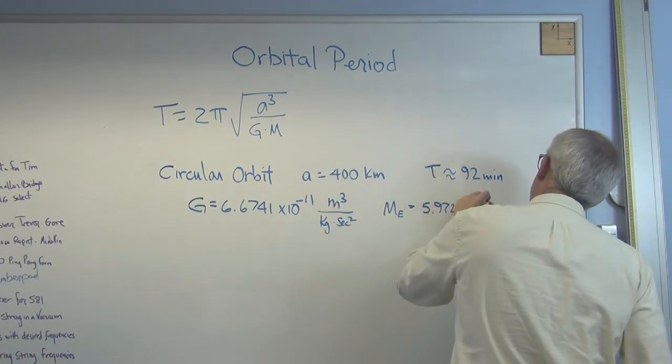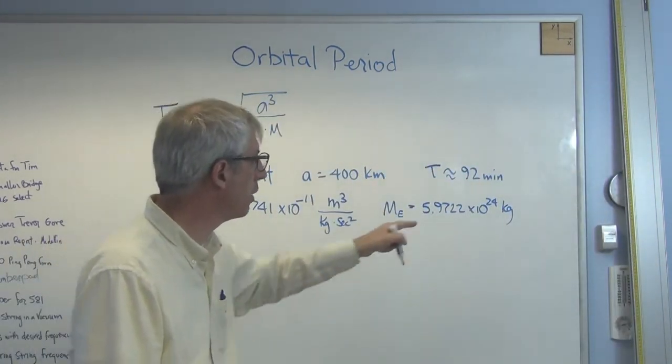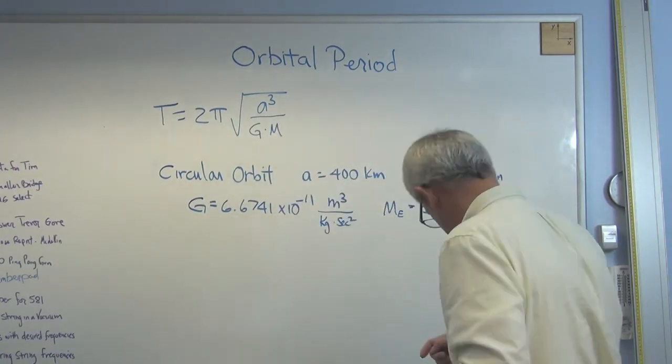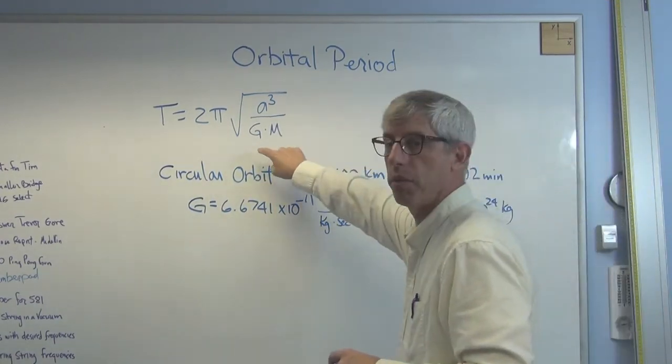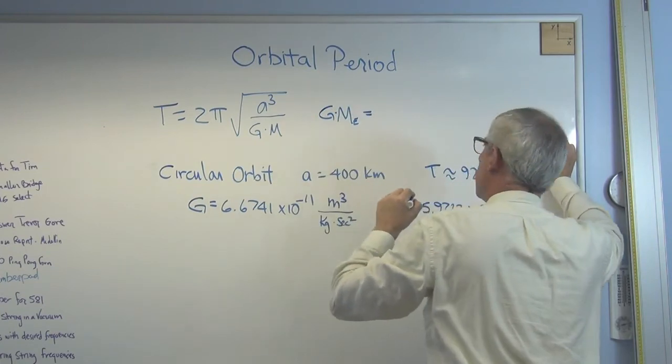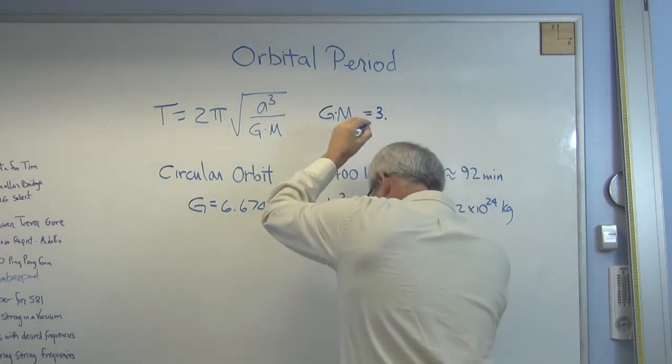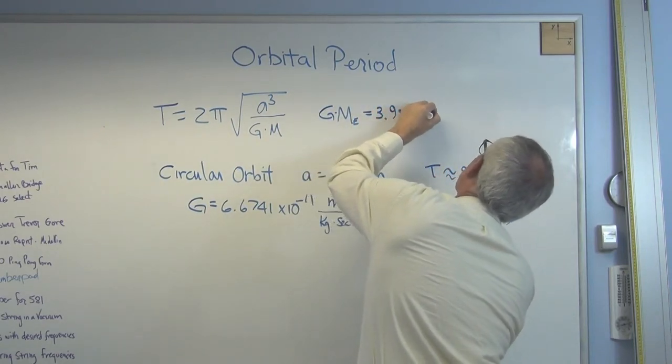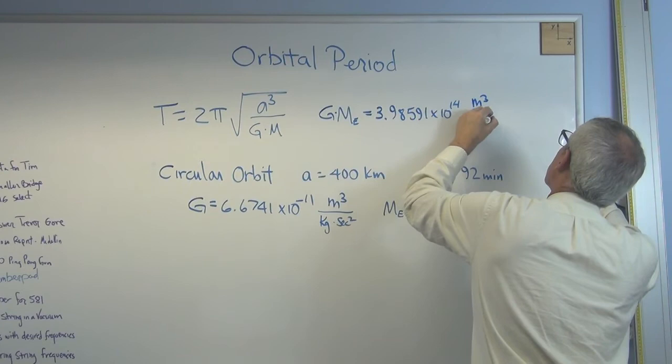5.9722 times 10 to the 24th kilograms. This is obviously a very large number. If you want the mass of the Earth in kilograms, you're going to get a huge number. Well, there it is. Now, you don't generally need that number by itself, or this number by itself. You do need the product of them quite a lot. So it helps to kind of know what that is. I'm going to call this just 3.986 times 10 to the 14th, and that's in meters cubed over second squared.